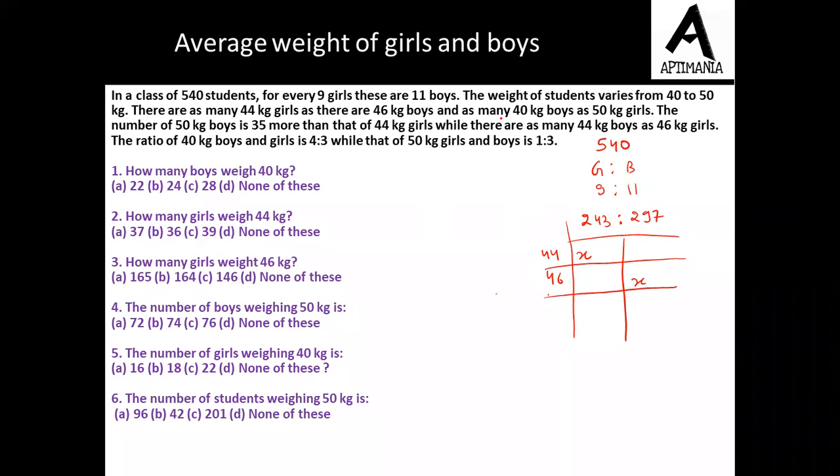And further, as many 40 kg boys as 50 kg girls. So two more weights, 40 kg and 50 kg. So as many 40 kg boys, let it be y, as 50 kg girls.